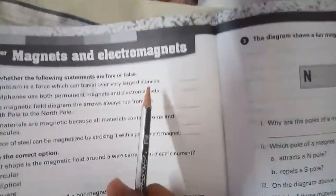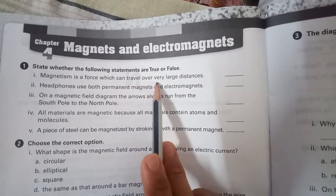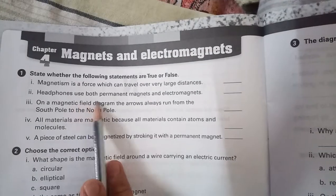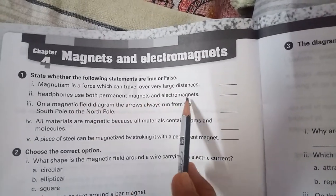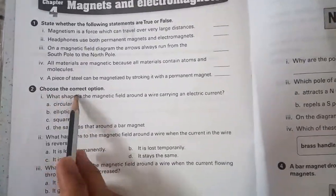So magnetism is a force which can travel over very large distances, is it true or false? Headphones use both permanent magnets and electromagnets, is it true or false? So in this way you can do the question number two, choose the correct option.